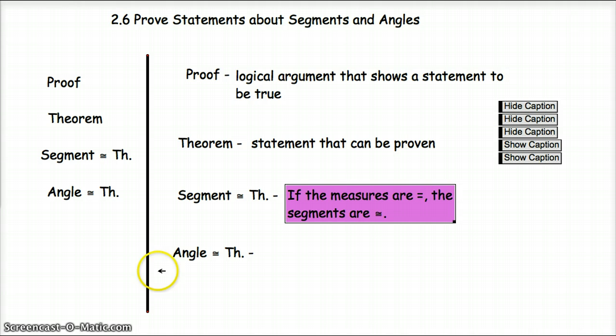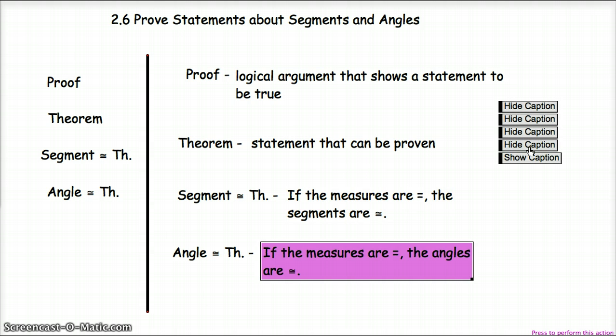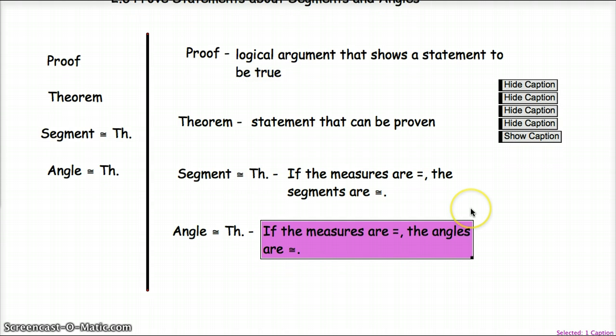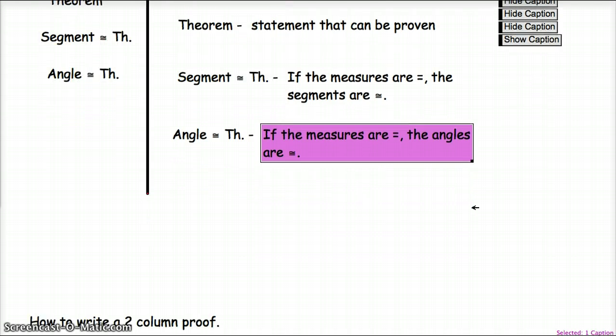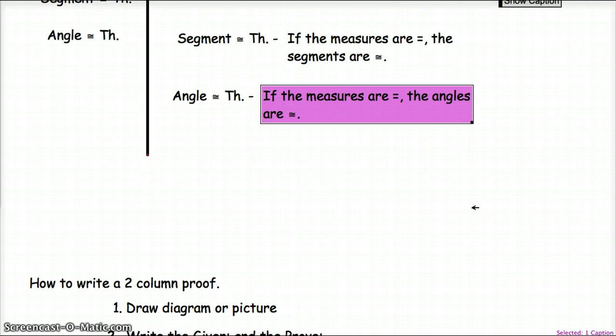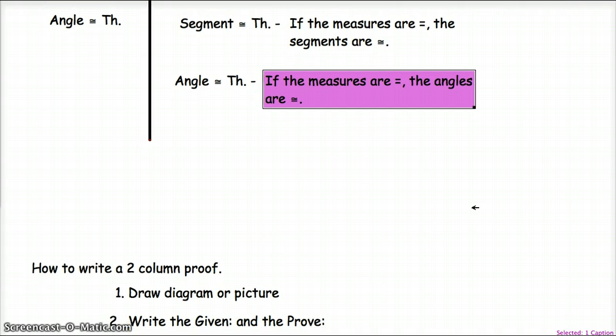Now let's take a look at our angle congruence theorem. Basically an angle congruence theorem says that if the angle measures are equal, then the angles are congruent. So angle congruence theorem, if the angle measures are equal, then the angles are congruent. Again, stuff that you already know, that's not anything that's crazy out there.